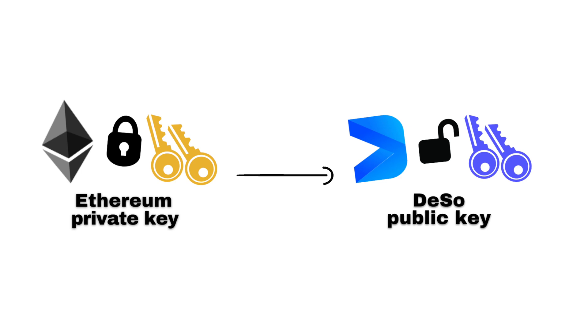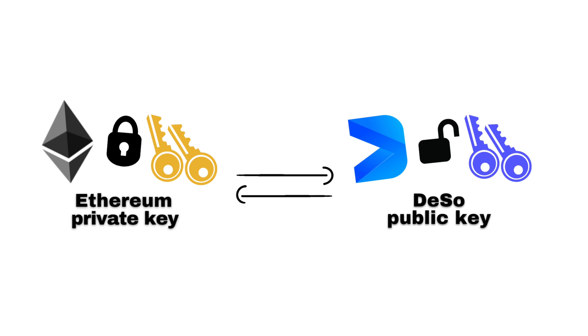A private key on Ethereum corresponds to the exact same public key on both blockchains. This allows for translating a MetaMask wallet into a Deeso wallet fairly easily.